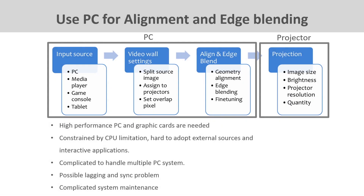Another scenario extends PC usage to also handle alignment and edge blending, as some PC software provides a total solution. In this case, an even higher-performance PC with a very powerful CPU and GPU is required. When PC performance cannot keep up, video playback becomes unsmooth and images cannot be synchronized properly. Additionally, since most PC resources are consumed by these complex tasks, adding other external input devices such as interactive applications becomes even more complicated.